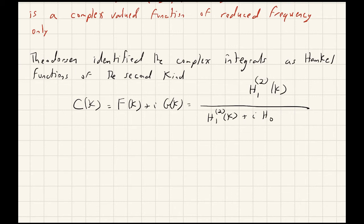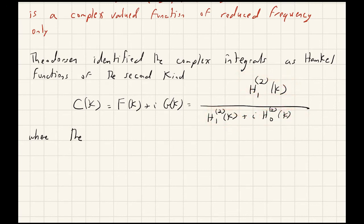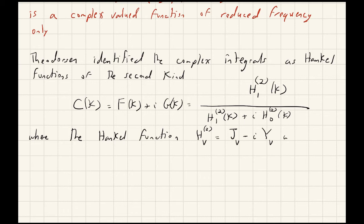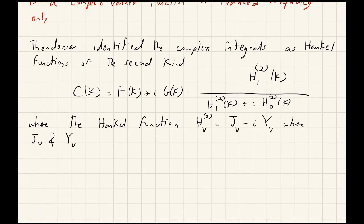These are very detailed details that you don't really need to know to use Theodorsen's function. Just for your information: each H here is a Hankel function of the second kind, H_v⁽²⁾, which is a complex-valued function J_v − iY_v, where J_v and Y_v are Bessel functions of the first and second kind respectively.